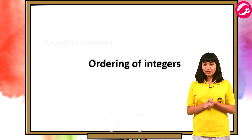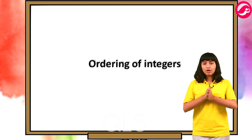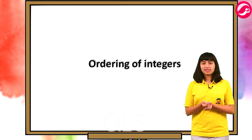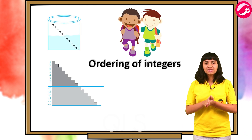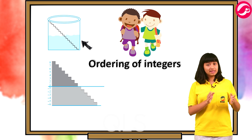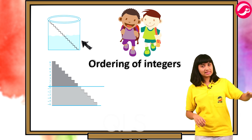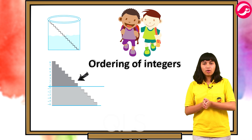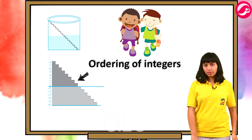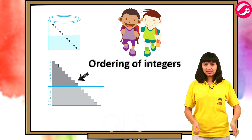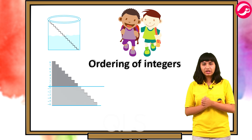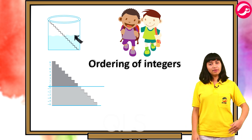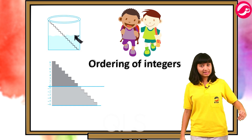Now let's move to our next topic: ordering of integers. I will teach this through an observation. Ramana Nimran lives in a village where there is a step well. Step well mein neeche tak bilkul bottom tak sidiyan rakhi hui hain. There are in all twenty-five steps down to the bottom of the well. One day Ramana Nimran went to the well and counted eight steps down to the water level.